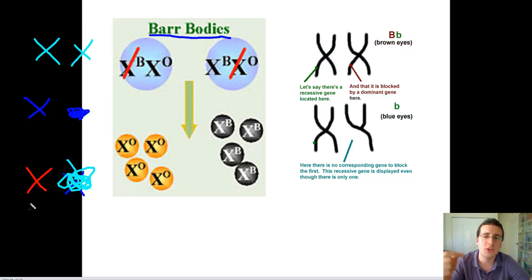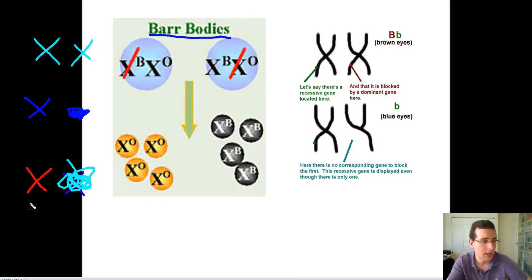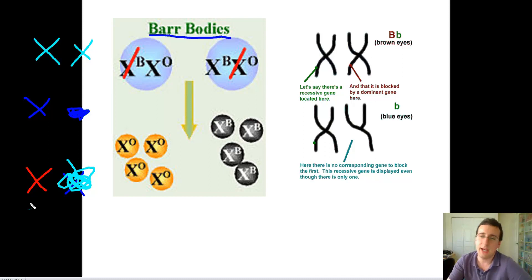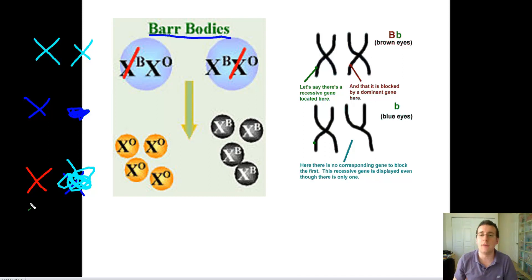Females are still less likely than males to show the disease because they at least have a 50% shot of being protected — in case the bad X gets deactivated during the deactivation process. Since the process is usually random, females who are carriers have at least a 50% chance of not having the disease. Guys, because they only have one X, if they have the bad X they always show the disease. So X chromosome deactivation means carrier girls can sometimes show the disease when the wrong X deactivates, but guys will have a higher tendency regardless because they don't have a protective X.